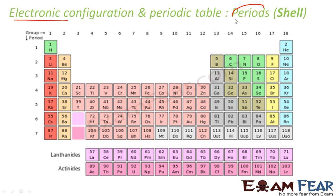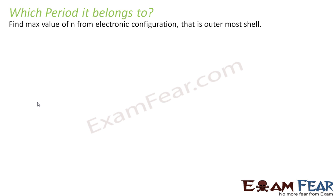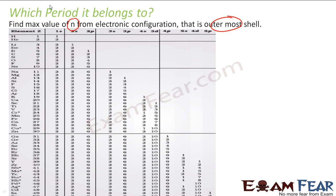The electronic configuration tells us the period, which is nothing but the shell number. There are seven periods in the periodic table — period 1 through period 7. To find the period, I have to find the maximum value of n, which is the outermost shell. For hydrogen, the maximum value of n is 1 (1s¹), and for helium also n=1, so both belong to the first period.